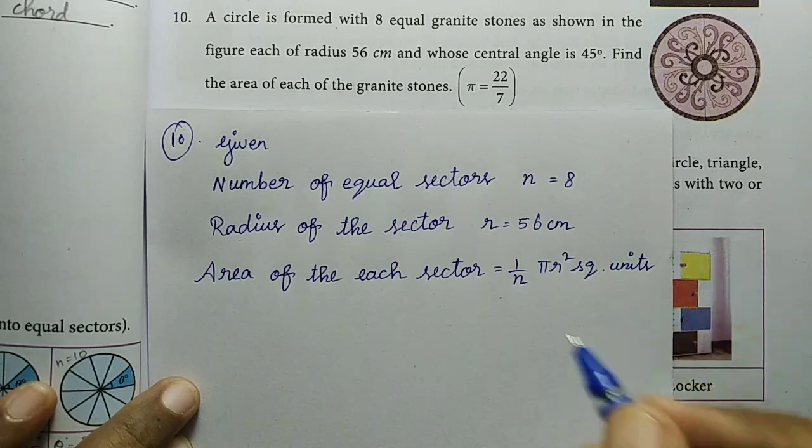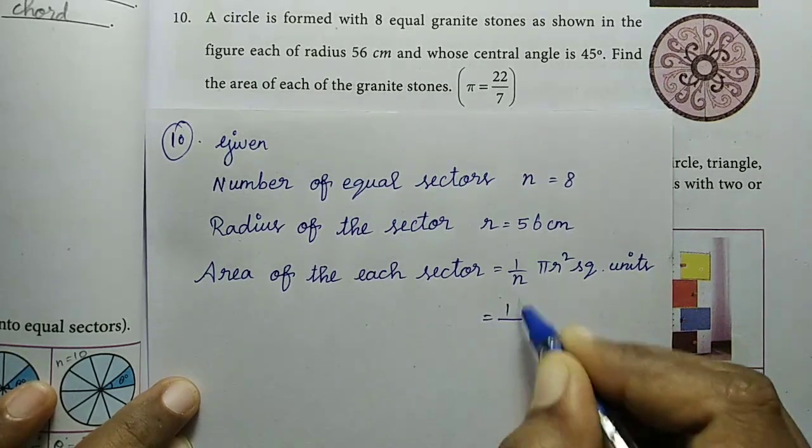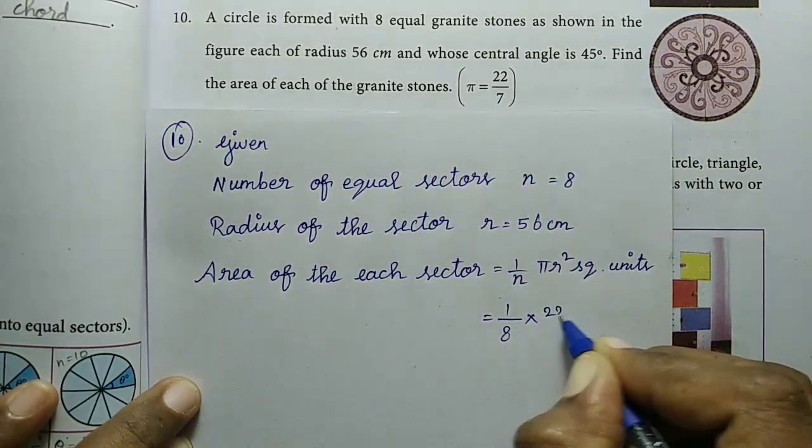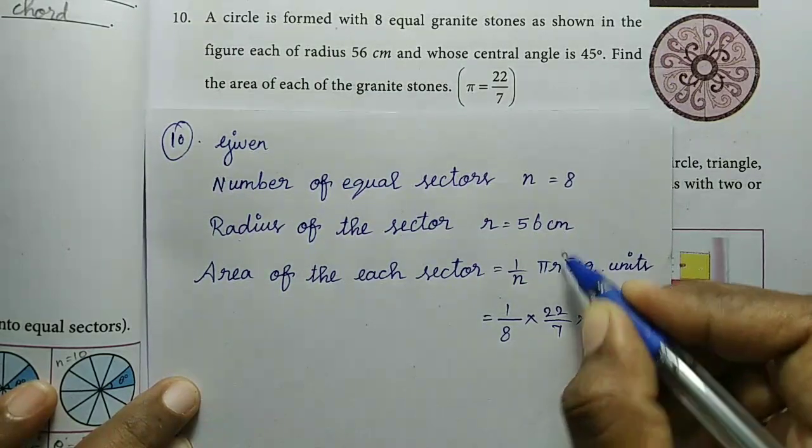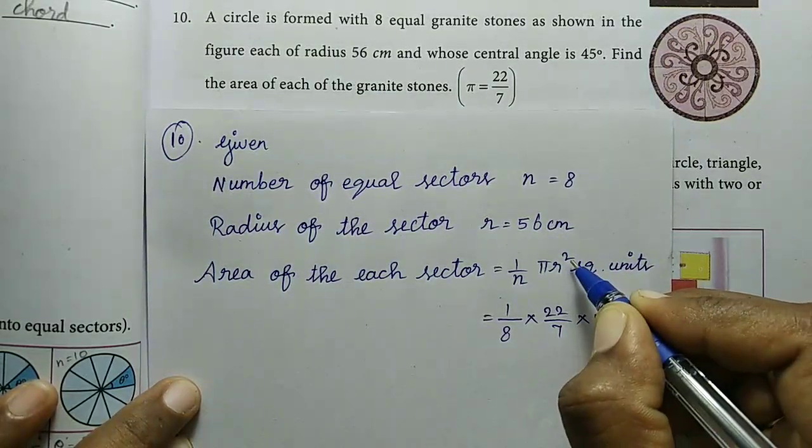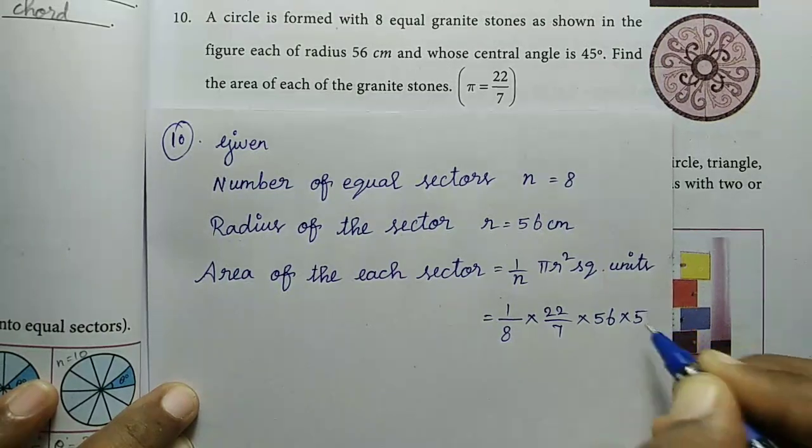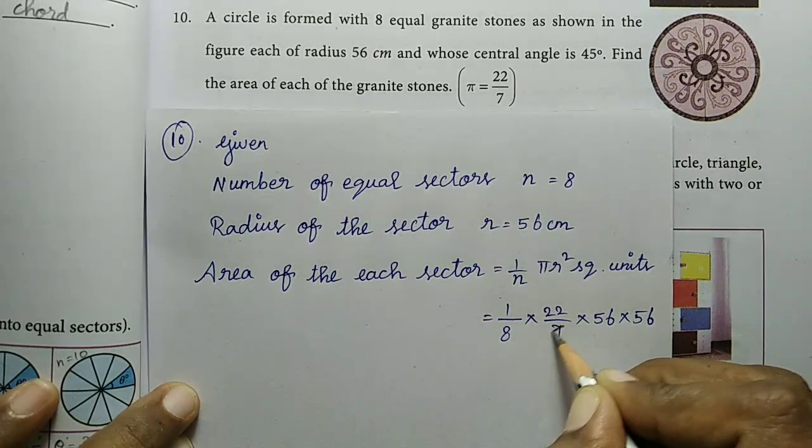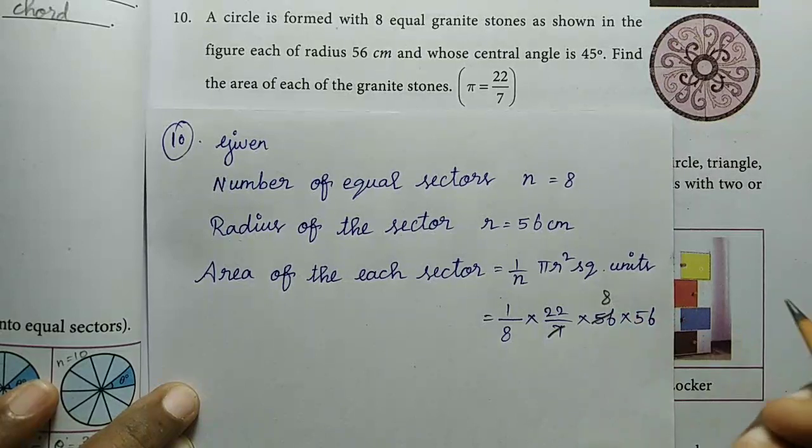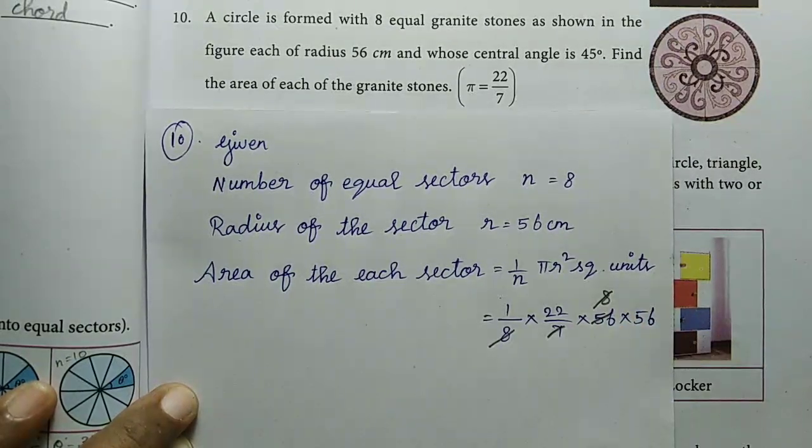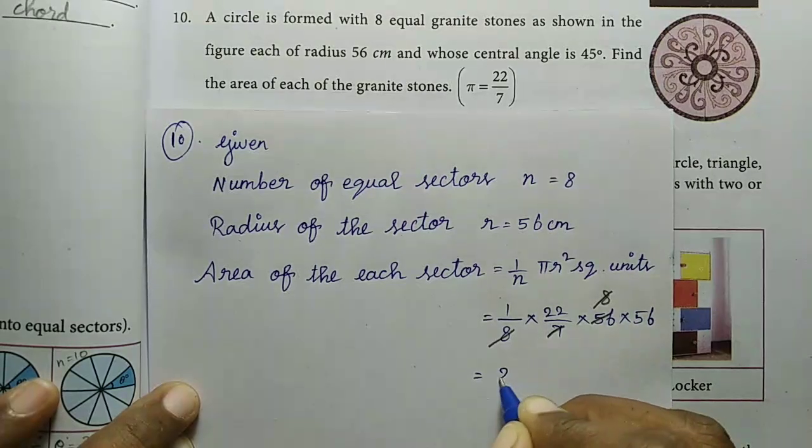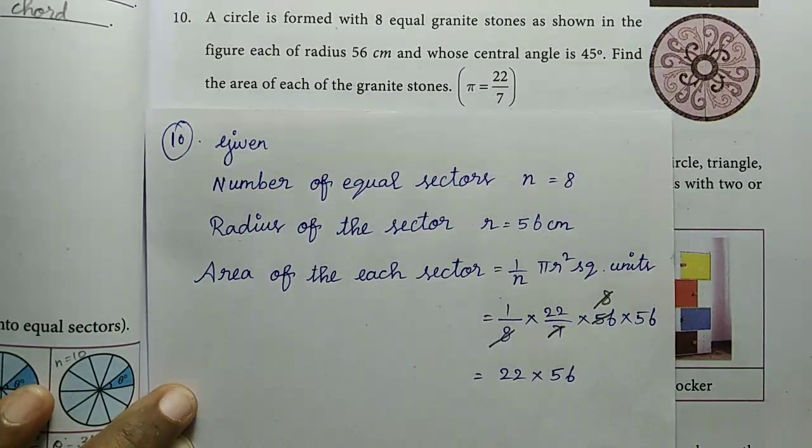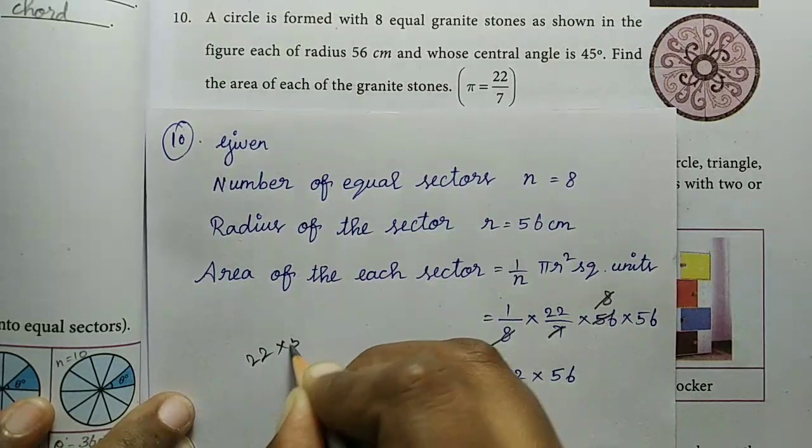1 divided by N, pi... 22 divided by 7, 22 divided by 7. 8 sevens are 56, so the 8 and 8 cancel. So remaining values: 22 into 56, 22 into 56. So this is the value 22 into 56. 6 twos are 12, remaining 1.